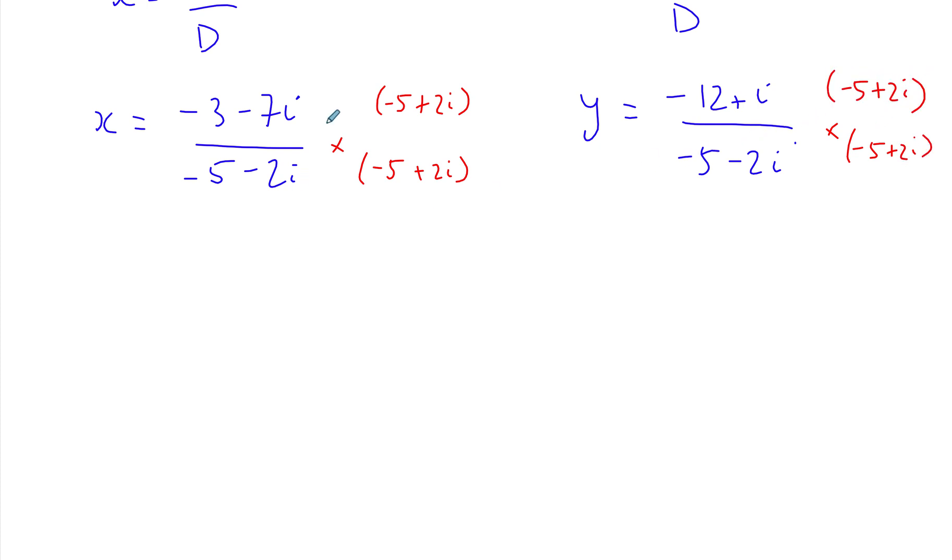This whole thing is going to simplify to 29 + 29i, and for this one we're going to have 58 - 29i over 29.